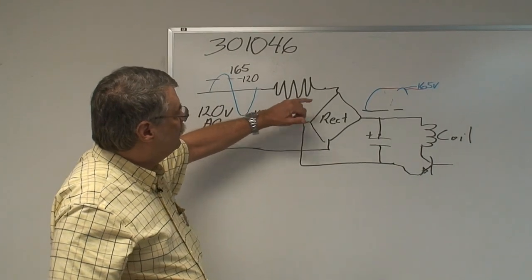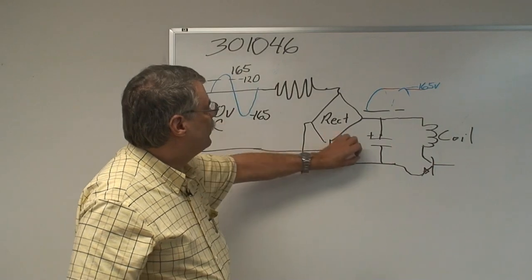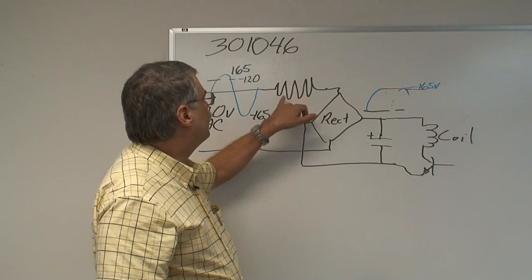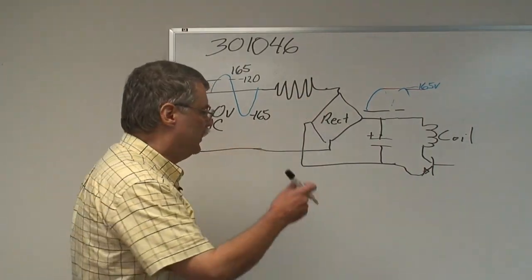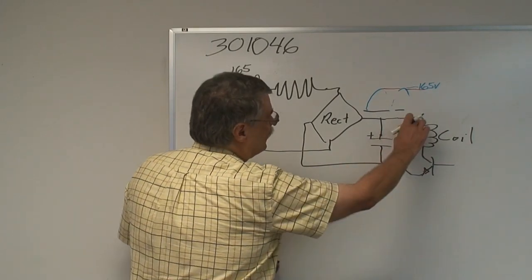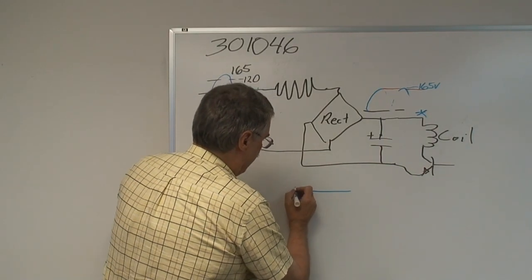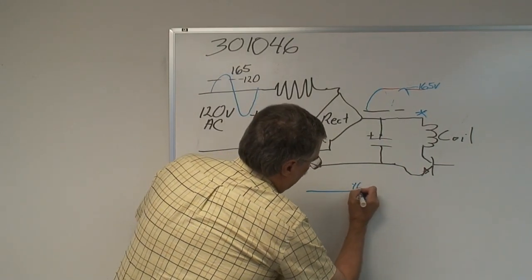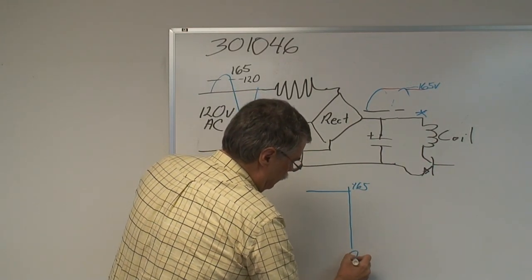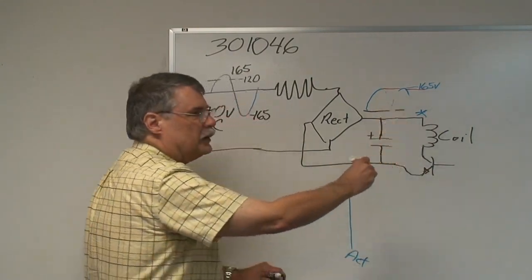Now, because of this resistor, when there's no current flowing, this capacitor goes up to the full 165 volts. So when current starts to flow, there's a voltage drop across this resistor. So the voltage here comes along at 165, and then we have the moment when the transistor is actuated.